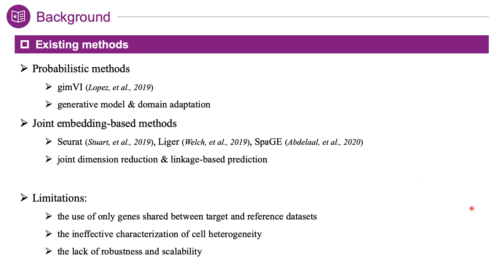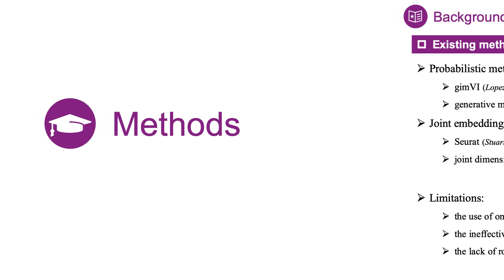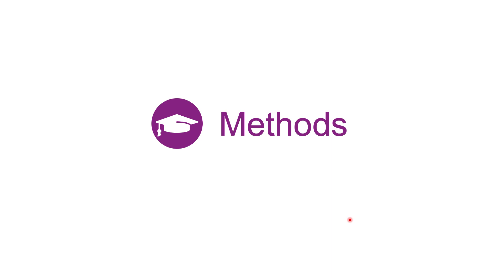Existing methods can be divided into two major categories, including probabilistic methods and joint-embedding-based methods. However, there are limitations such as the use of only shared genes, the ineffective characterization of cell heterogeneity, and the lack of robustness and scalability. To fill this gap, we proposed ST-plus for the enhancement of spatial transcriptomics.